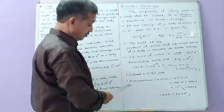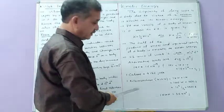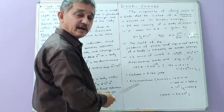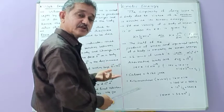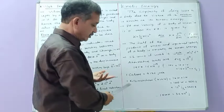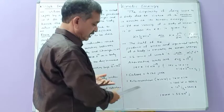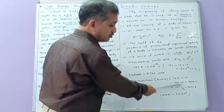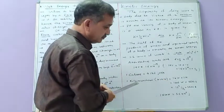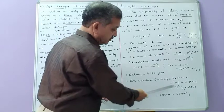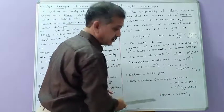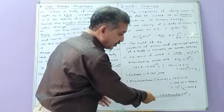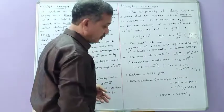Another unit of energy is kilowatt hour (KWH). From the work-energy theorem, the unit of work is the same as the unit of energy. 1 kilowatt hour equals 1 kilowatt multiplied by 1 hour, which is 1000 watts × 3600 seconds. Since watt equals joule per second, this gives 10³ × 3600 = 3.6 × 10⁶ joule. So 1 KWH equals 3.6 × 10⁶ joule.